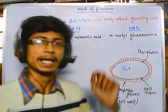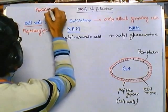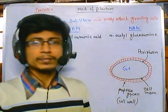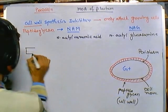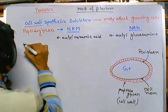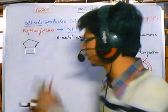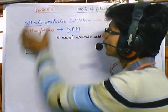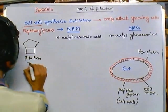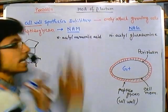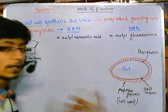Now let's talk about the mode of action of penicillin. Penicillin is a beta-lactam ring-containing antibiotic. Its structure consists of a four-carbon ring and a five-carbon ring attached together — this is the beta-lactam ring. Antibiotics containing this beta-lactam ring are part of the beta-lactam antibiotic family, including penicillin, amoxicillin, ampicillin, carbapenems, and cephalosporins. These antibiotics disrupt the synthesis of peptidoglycan.